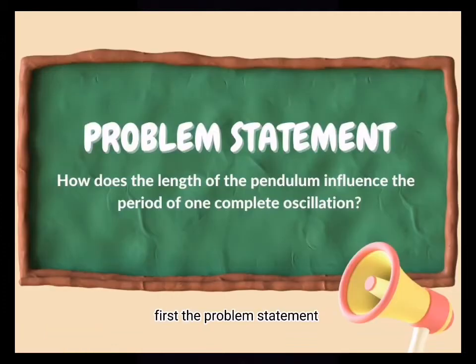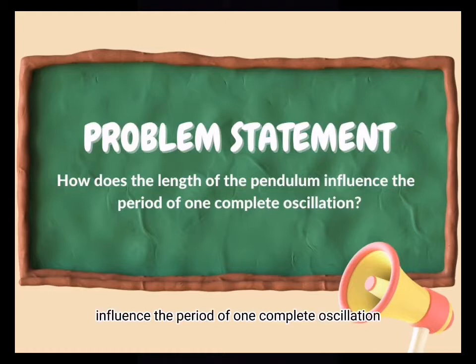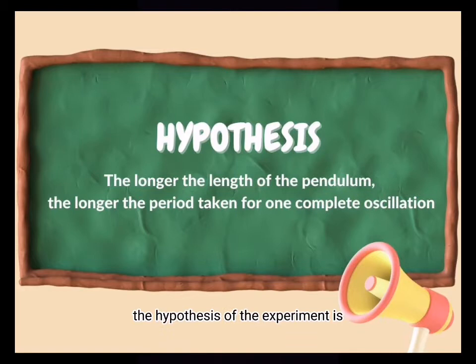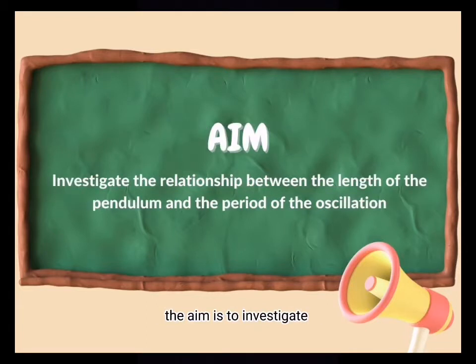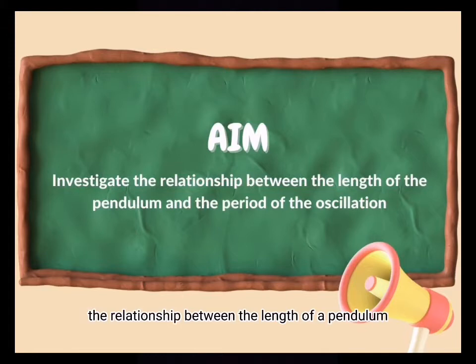First, the problem statement: How does the length of a pendulum influence the period of one complete oscillation? The hypothesis of the experiment is: the longer the length of a pendulum, the longer the period taken for one complete oscillation. The aim is to investigate the relationship between the length of a pendulum and the period of oscillation.